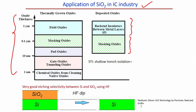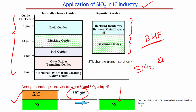There is very good etching selectivity between Si and SiO2 using HF. If I have silicon dioxide on silicon and dip it in HF — or buffer hydrofluoric acid — only the silicon dioxide will get etched without affecting the silicon.